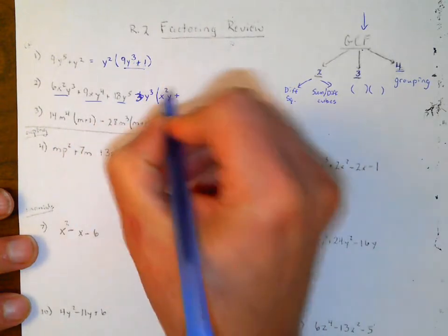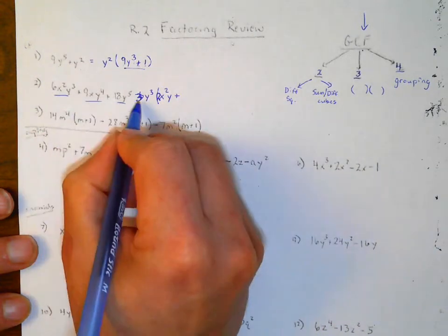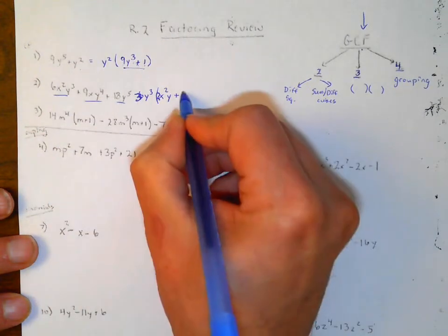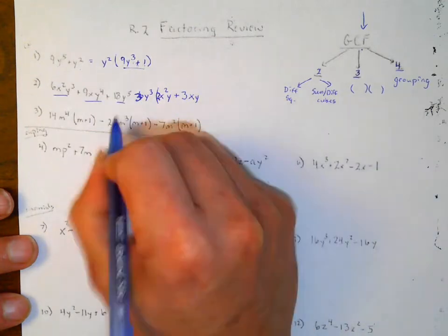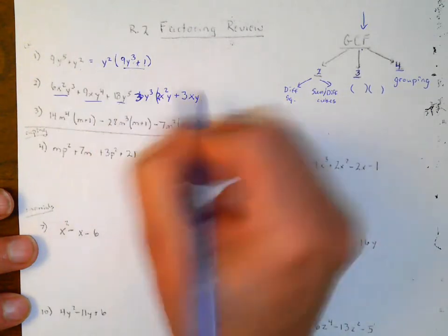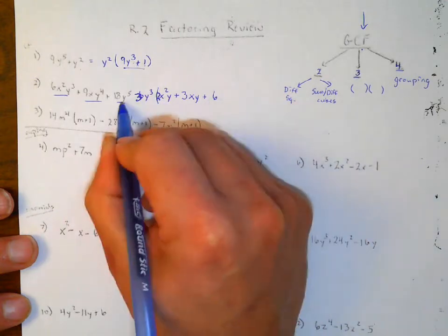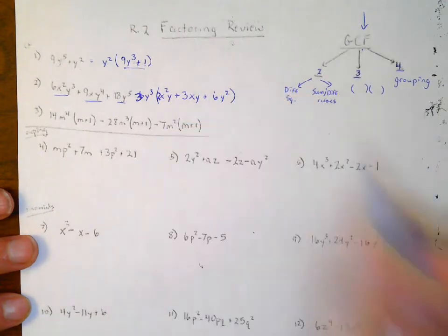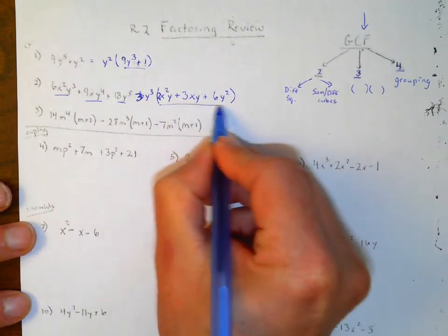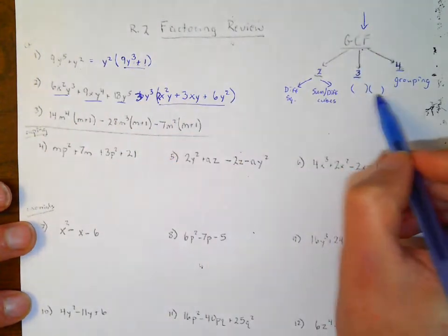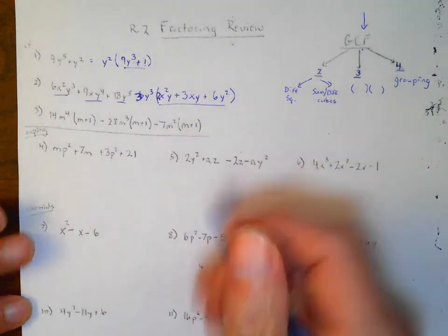Taking a 3 out makes 2x² here. If I take a 3 out, I'm left with 3xy from the middle term. Take a 3 out of the last term and 6 becomes a 2 with y² left. We look here — three terms. I would set up the parentheses here and try to work this out, but it just doesn't factor in this case.